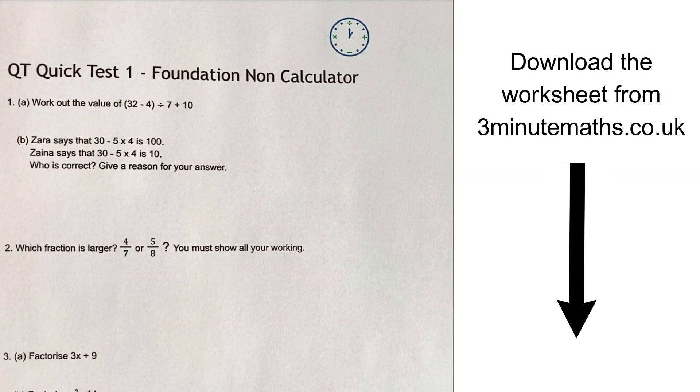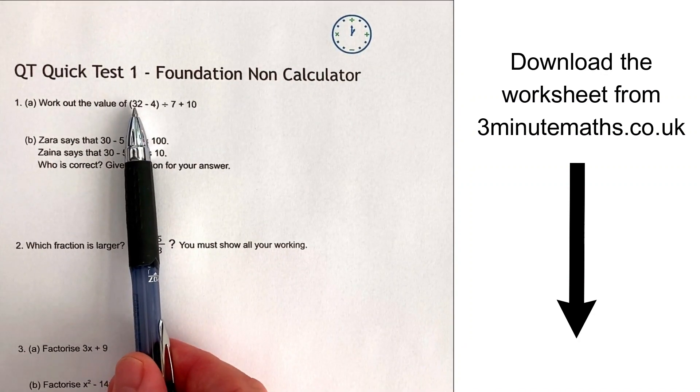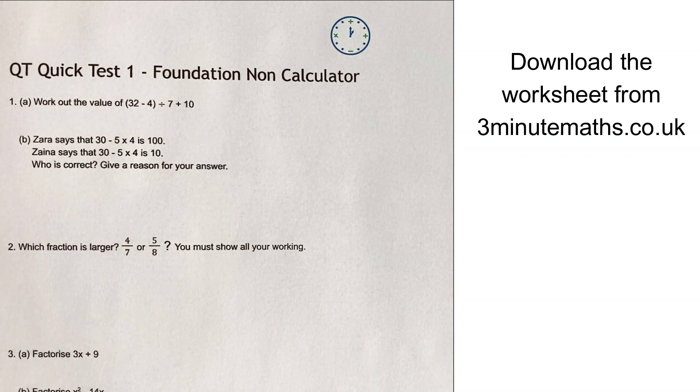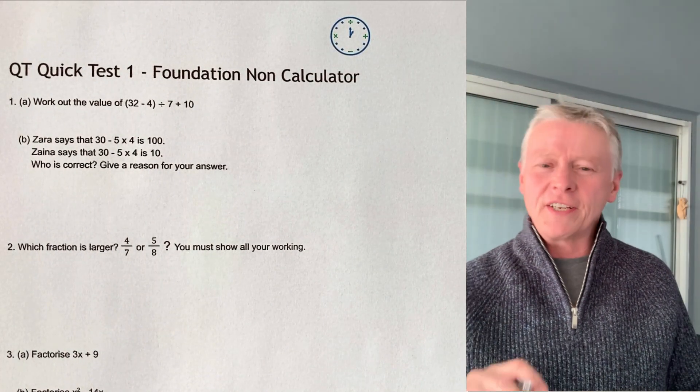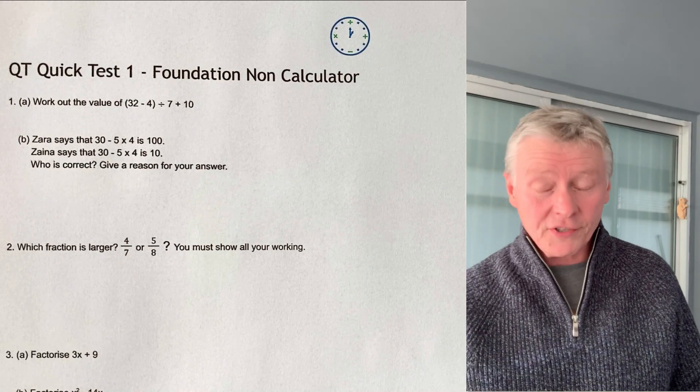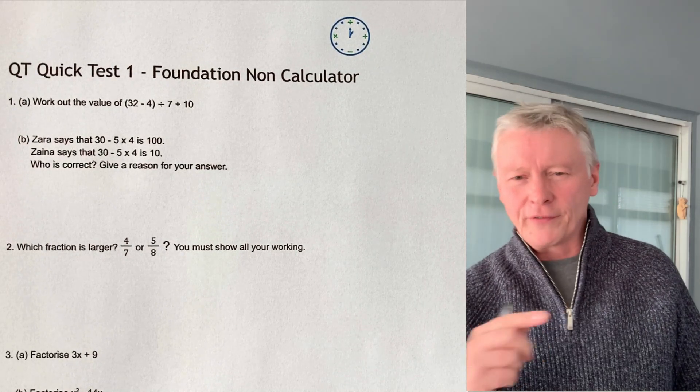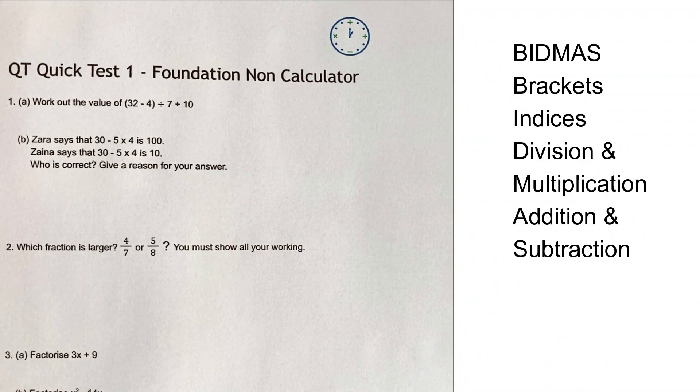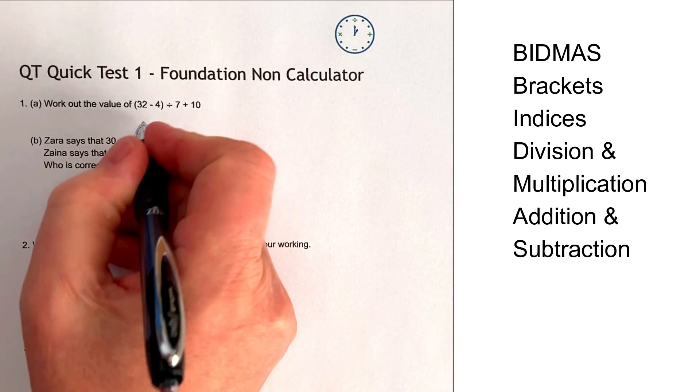On to the first one then. It says work out the value of 32 minus 4 in brackets divided by 7 plus 10. The most important thing with this is that it's a BIDMAS type question. So you always do what's in the brackets first, followed then by either division or multiplication, and then afterwards by addition, subtraction. So the first thing we need to do is work out what's in the brackets first, which is going to be 28.